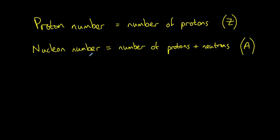These proton and nucleon numbers are presented together in the AZX notation. For example, helium with a nucleon number of four and a proton number of two would be written like this where the X is replaced by helium symbol He, or oxygen like so.